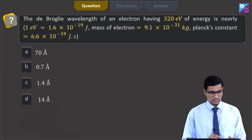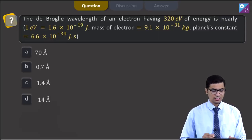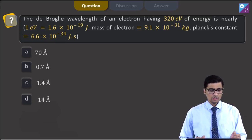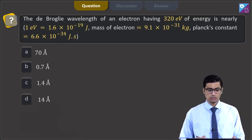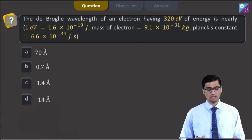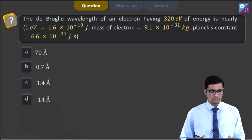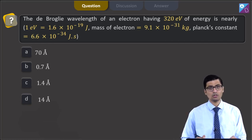This is question 41. The question states: the de Broglie wavelength of an electron having 320 electron volts of energy is nearly. It is given that 1 electron volt is equal to 1.6 × 10⁻¹⁹ joules, mass of electron is 9.1 × 10⁻³¹ kg, and Planck's constant is 6.6 × 10⁻³⁴ joule-seconds. The four options are 70 Å, 0.7 Å, 1.4 Å, and 14 Å.